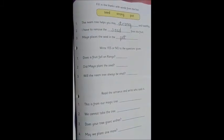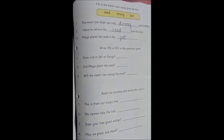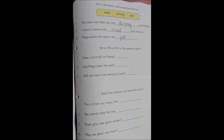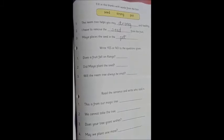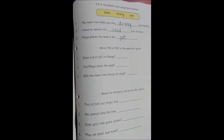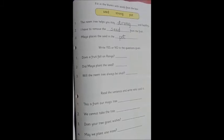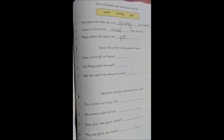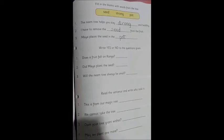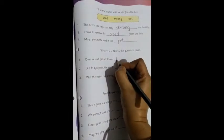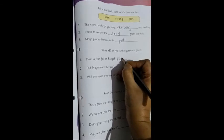Now we move to the second segment. Write yes or no to the questions given. So there is a question given. We have to answer yes or no. Does a fruit fall on Ranga? No. The fruit does not fall on Ranga, but does it fall on the ground? So we will write N-O. No.